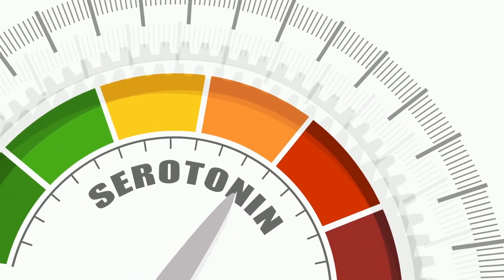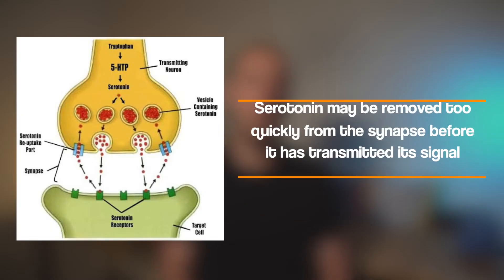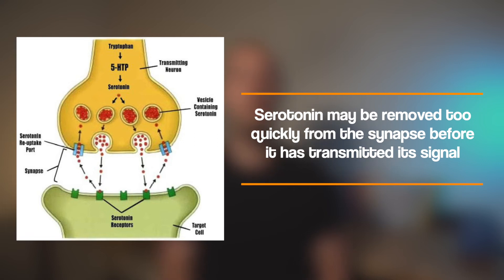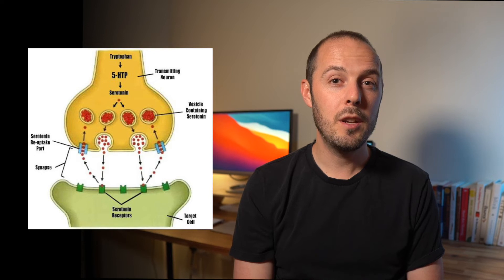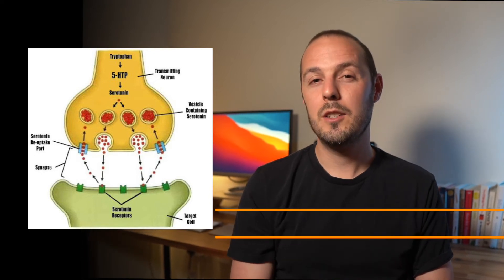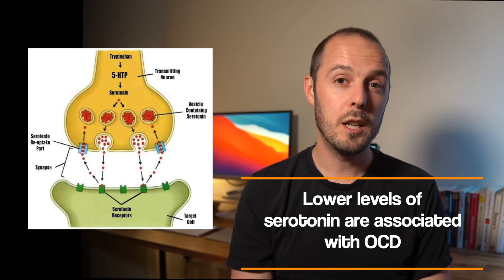Neurotransmitter two: serotonin. Low levels of serotonin have been associated with anxiety and OCD. The idea here is that serotonin may be removed too quickly from the synapse before it has transmitted its signal. For more information about the how and why of serotonin with OCD, check out the next video on biological treatments of OCD. But for this video, it's enough to understand that lower levels of serotonin are associated with OCD.